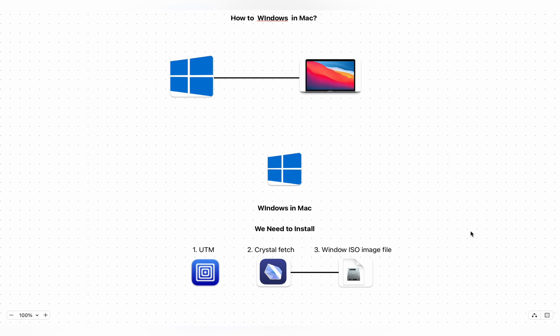For this we need to install UTM, which is a kind of a virtual machine, and we need to install CrystalFetch in order to download the Windows ISO file. Just like we installed Power BI on Mac — we also used the same process. First we installed Windows and then we installed Power BI.